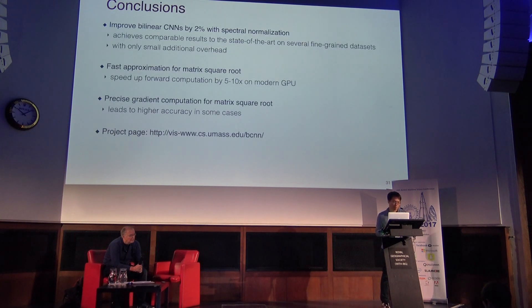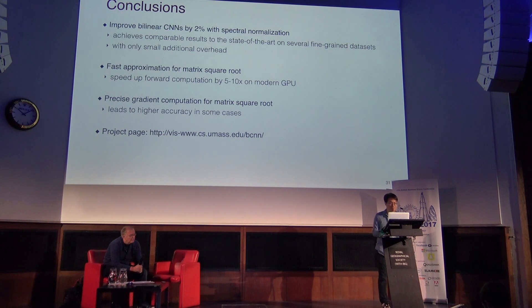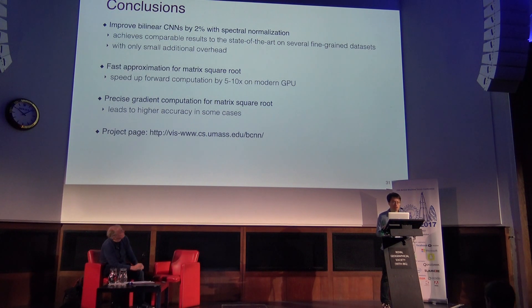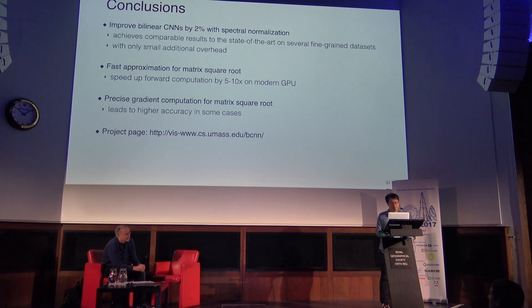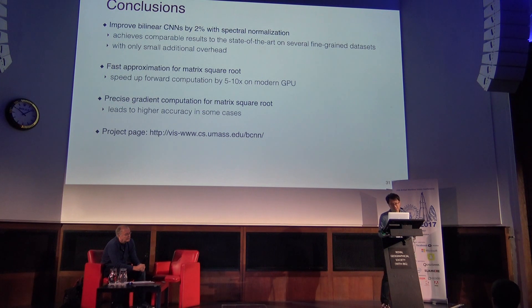In conclusion, we propose an improved bilinear model that uses spectral normalization and achieves comparable results to state-of-the-art methods on several fine-grained datasets with only small additional overhead. We demonstrate how to approximate the matrix square root efficiently by iterative method and achieve 10 times speedup over the straightforward implementation. We also demonstrate how to compute the gradient of the matrix square root exactly, which can lead to higher accuracy in some cases. Thank you for listening.